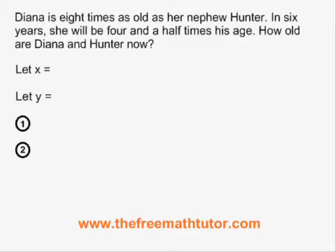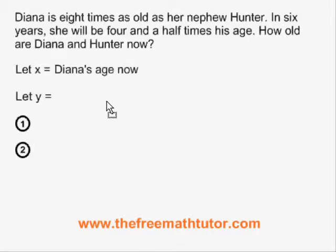The first thing to do is to define our x and y variables. The question at the end of the problem gives us a hint as to how to do that. Let x equal Diana's age now and let y equal Hunter's age now.